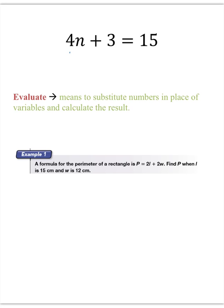Here's an equation. 4n plus 3 is equal to 15. To evaluate means to substitute numbers in place of variables and calculate the result. So, let's let n be equal to 3. So if n is equal to 3, you plug, or you substitute 3 for n.